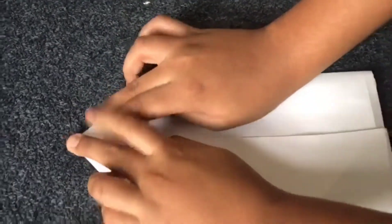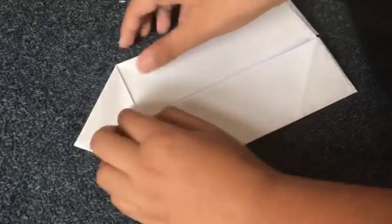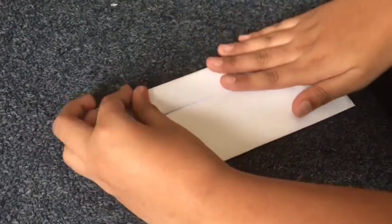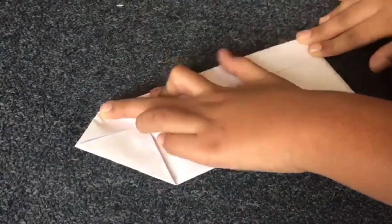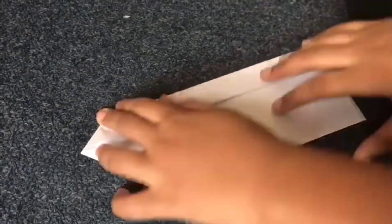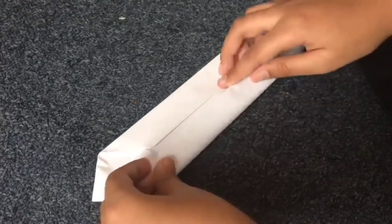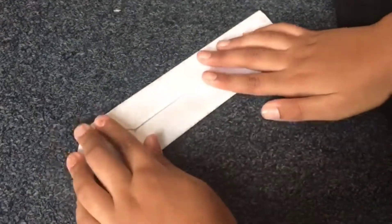Next, we will be folding the sides. Both the sides should meet at the center as he is doing now and the other side as well. So both the sides meet at the center.